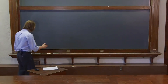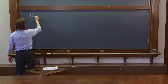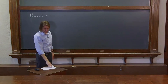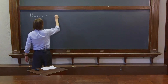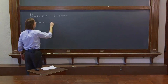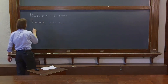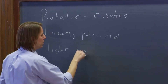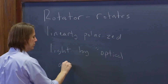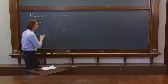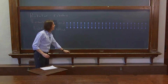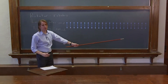Our next optical element for polarization is the rotator. A rotator does what it says — it rotates linearly polarized light by optical activity. We'll get into the definition of that in a minute. First, let's show what we mean by rotating linear light. Here we have some linearly polarized light going straight across the optical axis.